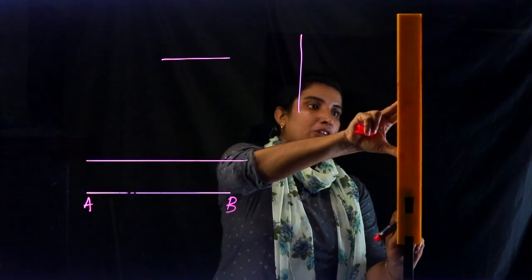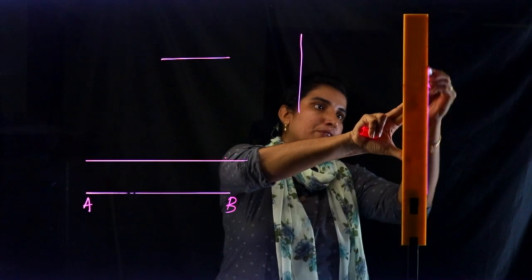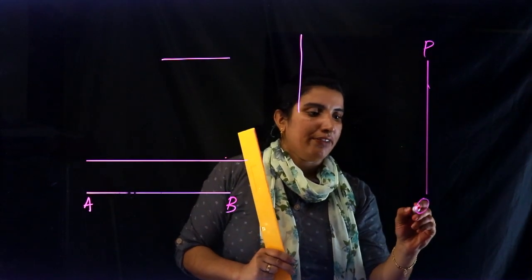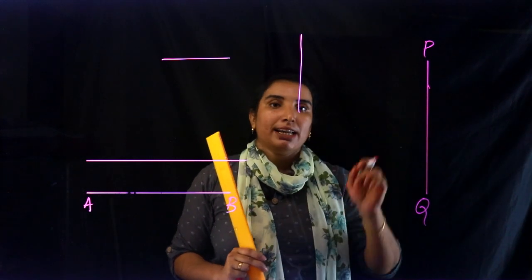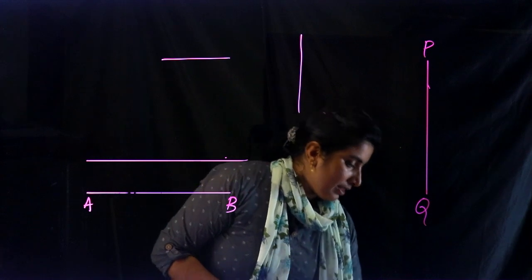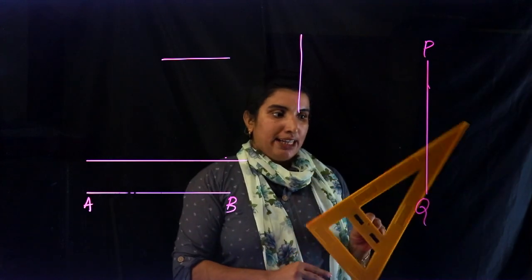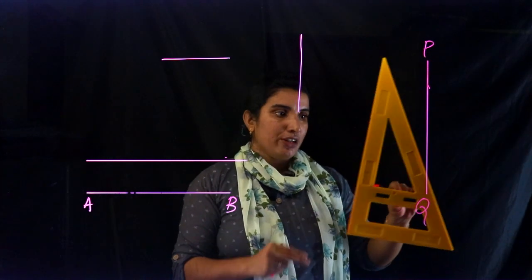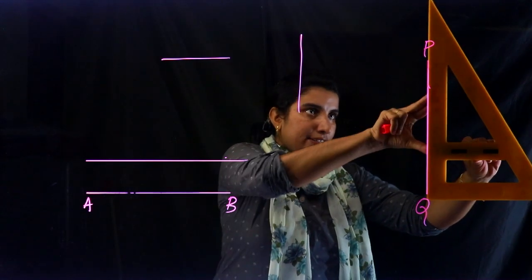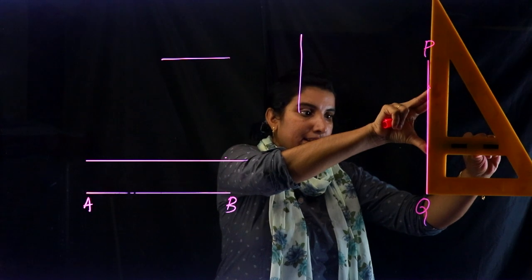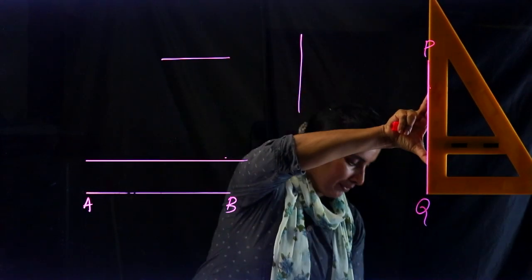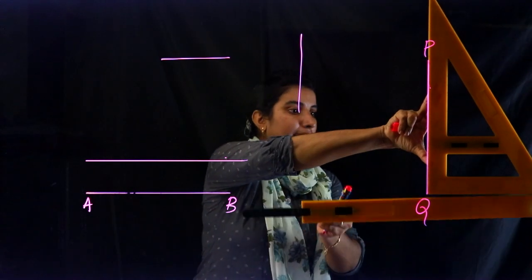Now we will put a line in parallel. We have a vertical line. This is a vertical line, and we will put a line in PQ. This is a parallel line. We will put a set square — this line will be set. You will put a line in a straight line.